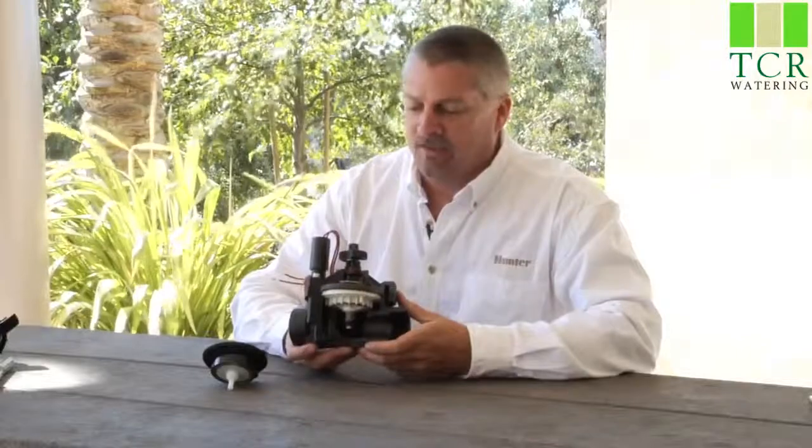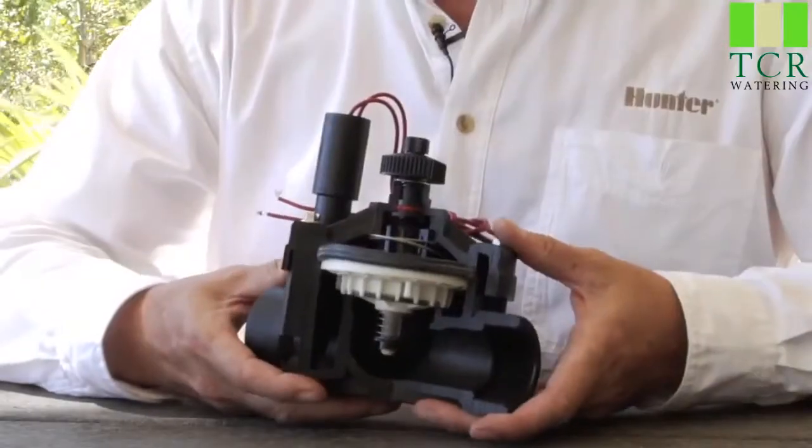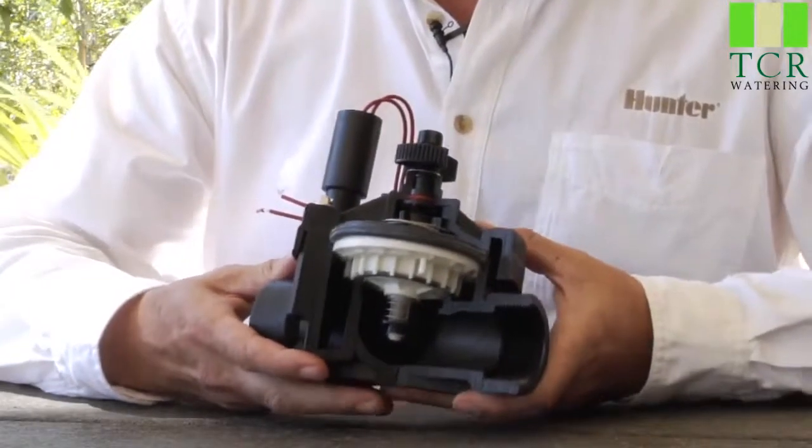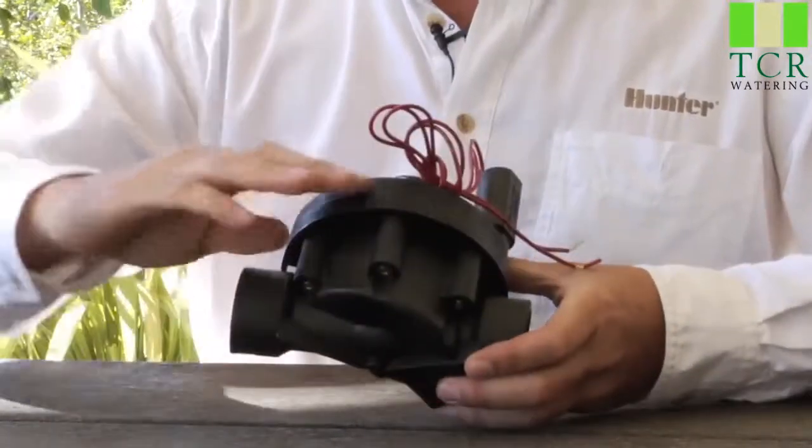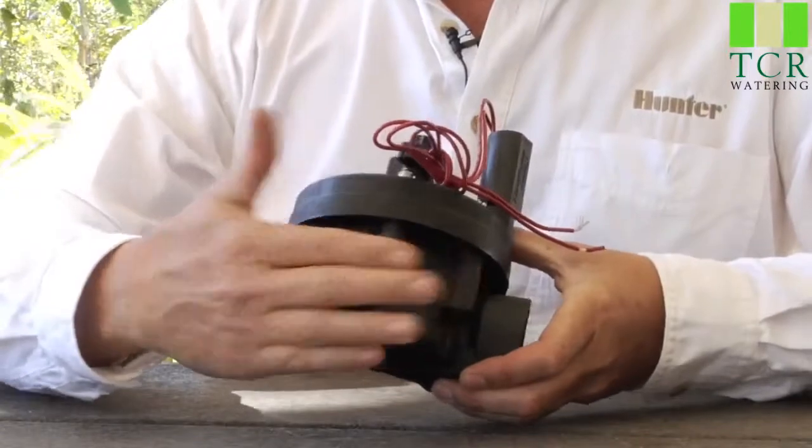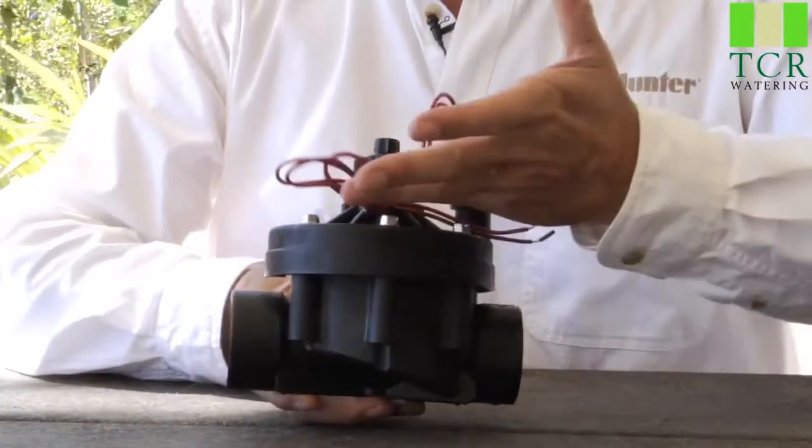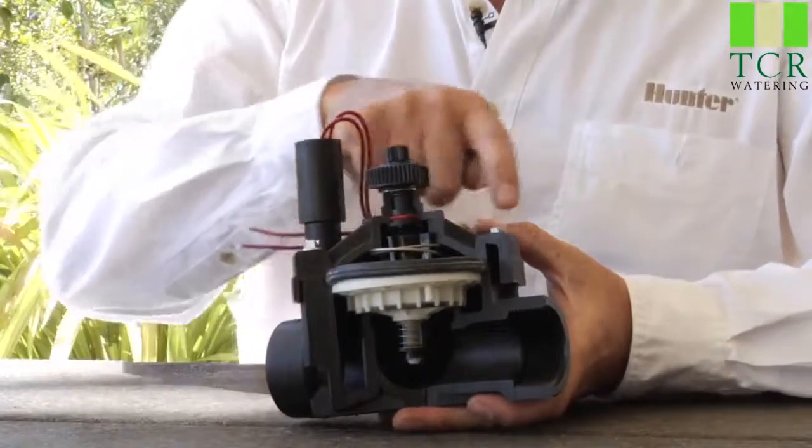So here we have an ICV inline valve. On the topic of general valve operations, we'll start by identifying the various parts of the valve. And here in the lower half is the valve body, and the upper half of that is called the valve bonnet, and that's held down by the screws.